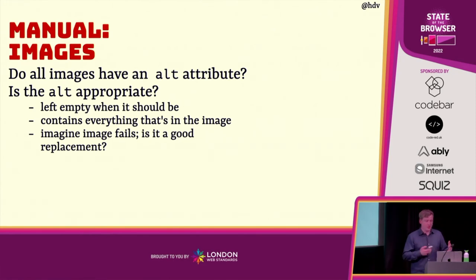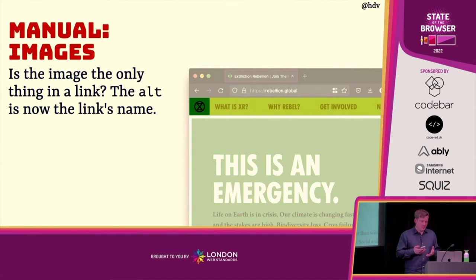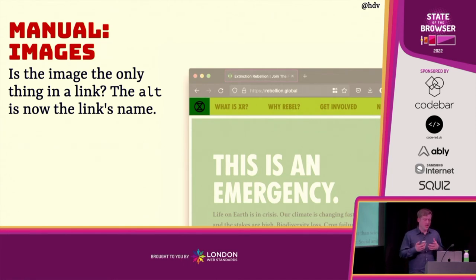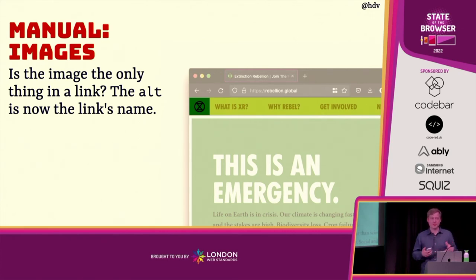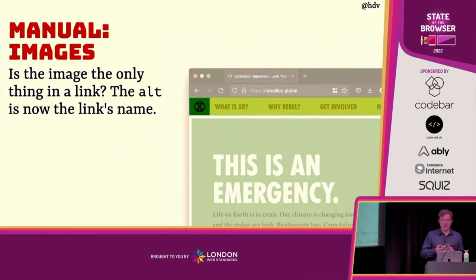Then images: do all of the images have an alt attribute? Is the attribute present? And is the content of the attribute appropriate? A caveat: when the image is the only thing inside a link, the alt text becomes the name of that link in the accessibility tree. In that case, for links to a homepage, it makes sense to put 'homepage' as your alternative text — even though it's a logo, putting that in your alt text makes it part of the link name.